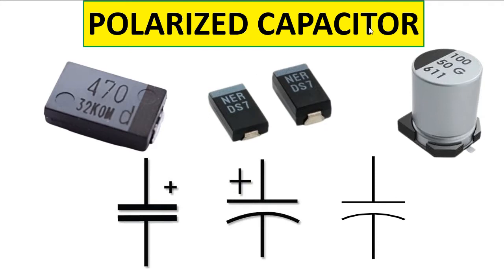This is the polarized capacitor, also called the electrolytic capacitor. We have many types here — for example, 470 means 470 microfarads, another one marked 100 means 100 microfarads, and 50 means 50 volts. The symbol for the polarized capacitor may appear with or without the plus sign marked, but one terminal always represents plus. The polarized capacitor contains both a plus and a minus terminal.